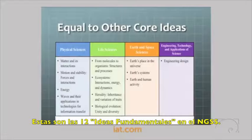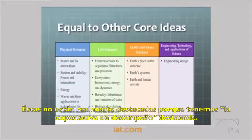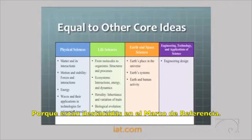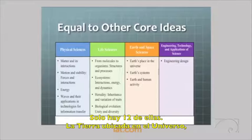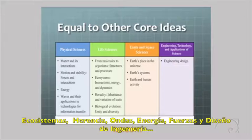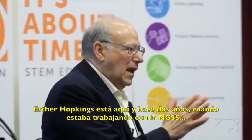There are 12 core ideas in the NGSS — emphasized in the framework. They include Earth's place in the universe, ecosystems, heredity, waves, energy, forces, and engineering design — all at the same level, all really important. One of the puzzles to solve: how can engineering design be both a core idea and a practice? In science, you have science as a practice but not specifically the nature of science as a core idea.